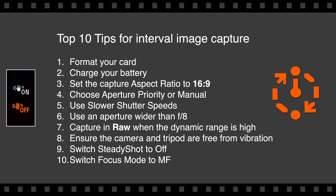Number five: use slower shutter speeds — I'll talk a little bit more about that shortly. Number six: use an aperture wider than f8. The reason for this is you don't want to be shooting at f16 and have sensor dust, because then you're going to have hundreds of frames with dust spots to clean. If you're shooting at f8 or wider, you'll find those dust spots aren't very visible at all. Number seven: capture in the raw file format so your dynamic range is as high as possible.